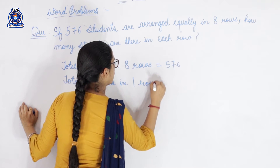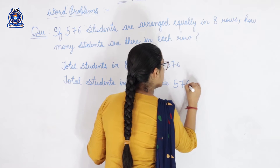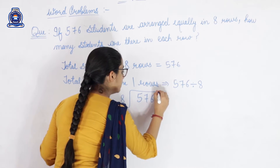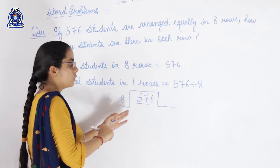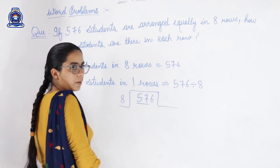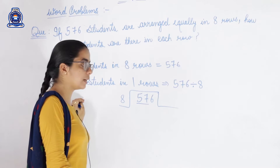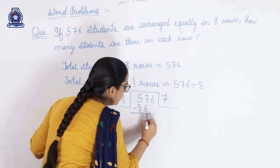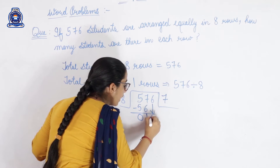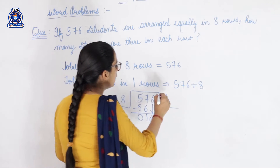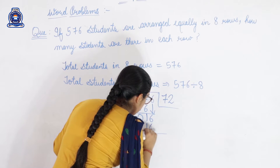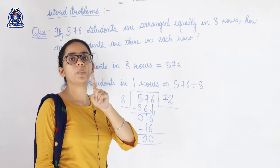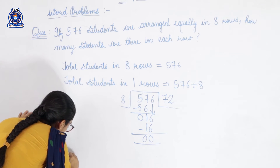We have to find total students in one row. Since more than one's value is given and we need to find one's value, we do division. We divide five hundred seventy-six by eight. We consider fifty-seven first, as five is smaller than eight. Eight sevens are fifty-six — we subtract: fifty-seven minus fifty-six is one; carry down six, making sixteen. Eight twos are sixteen. Subtract: sixteen minus sixteen is zero. So the quotient is seventy-two. It means seventy-two students are arranged in one row.